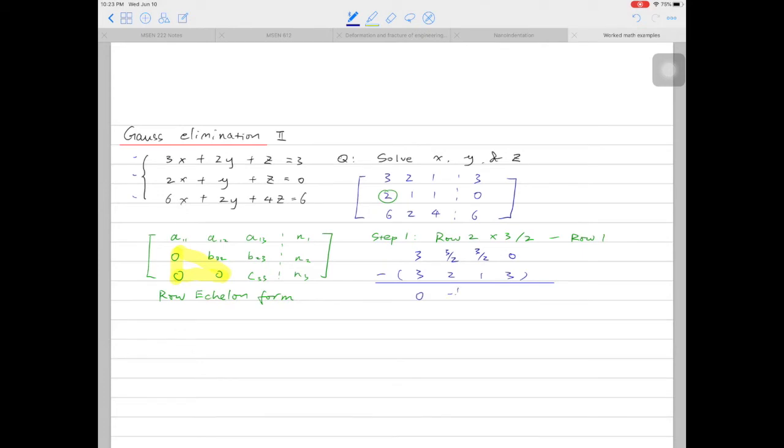After the subtraction, we have 0, minus half, half, and minus 3. So we can construct the new matrix with the new row 2. In this new matrix, row 1 and row 3 are the same, row 2 is new.